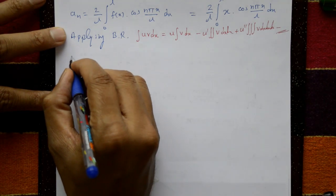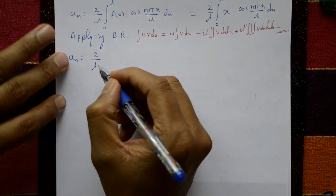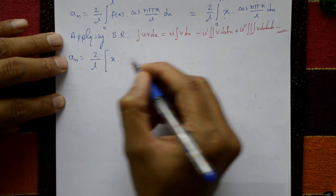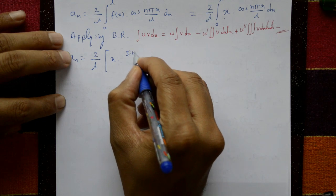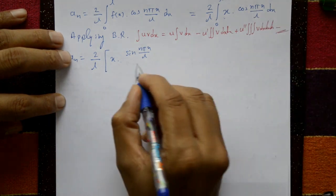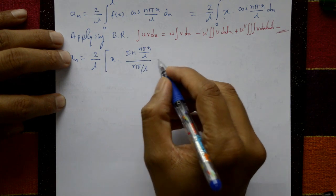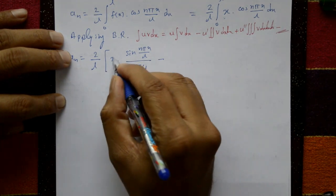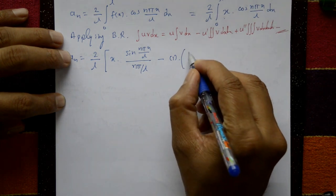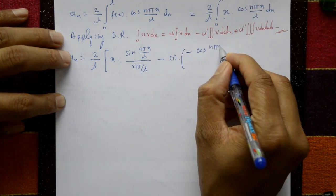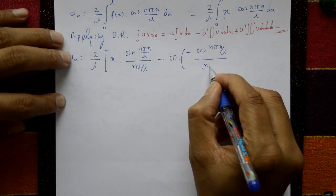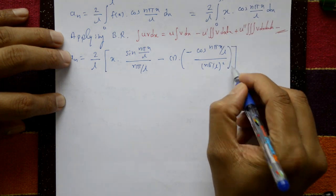Applying Bernoulli's rule: u = x, v = cos(nπx/l). aₙ = (2/l)[x · sin(nπx/l)/(nπ/l) minus 1 · (minus cos(nπx/l))/(nπ/l)²] from 0 to l. That gives (2/l)[x · sin(nπx/l)·(l/nπ) + cos(nπx/l)·(l/nπ)²] from 0 to l.